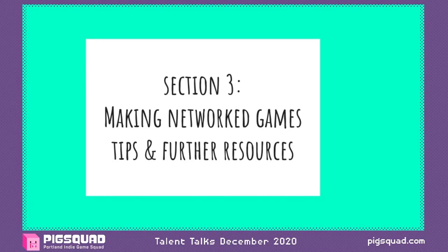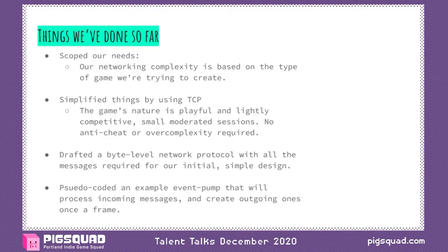This talk is running a little long so we're going to wrap up with Section 3. The things we've done so far: we've scoped our needs and made sure the complexity is not too much. We've thought about the fact that this is a simple, light, playful game where we don't need to think about anti-cheat or complex information hiding. We've drafted a byte-level network protocol with messages required for the initial simple design, and pseudocoded the event pump that takes incoming messages, applies them to game state, and generates outgoing messages — whether that's a server broadcasting to all clients or a client sending things to the server.